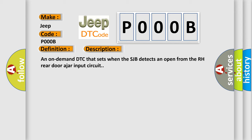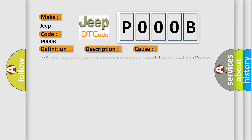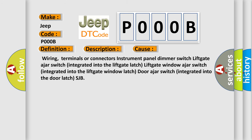This diagnostic error occurs most often in these cases: Wiring, terminals or connectors, instrument panel dimmer switch, liftgate ajar switch integrated into the liftgate latch, liftgate window ajar switch integrated into the liftgate window latch, door ajar switch integrated into the door latch, or SJB.